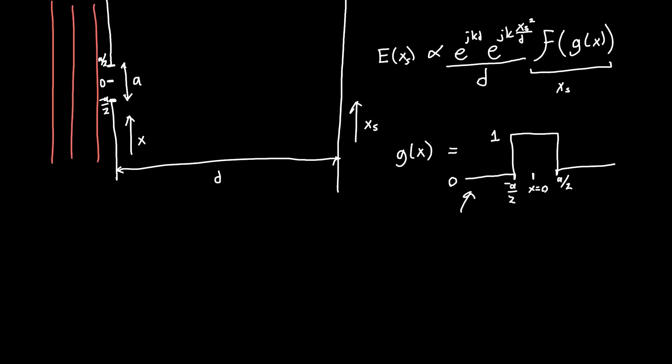If you haven't done that before, I suggest you review some videos on taking the Fourier transform, because it's fairly involved as a concept just to understand what the Fourier transform is. But I'll just write out the integral here for completeness. So F of g of x is just equal to the integral from minus infinity to infinity of g of x times e to the minus j kx times x dx.